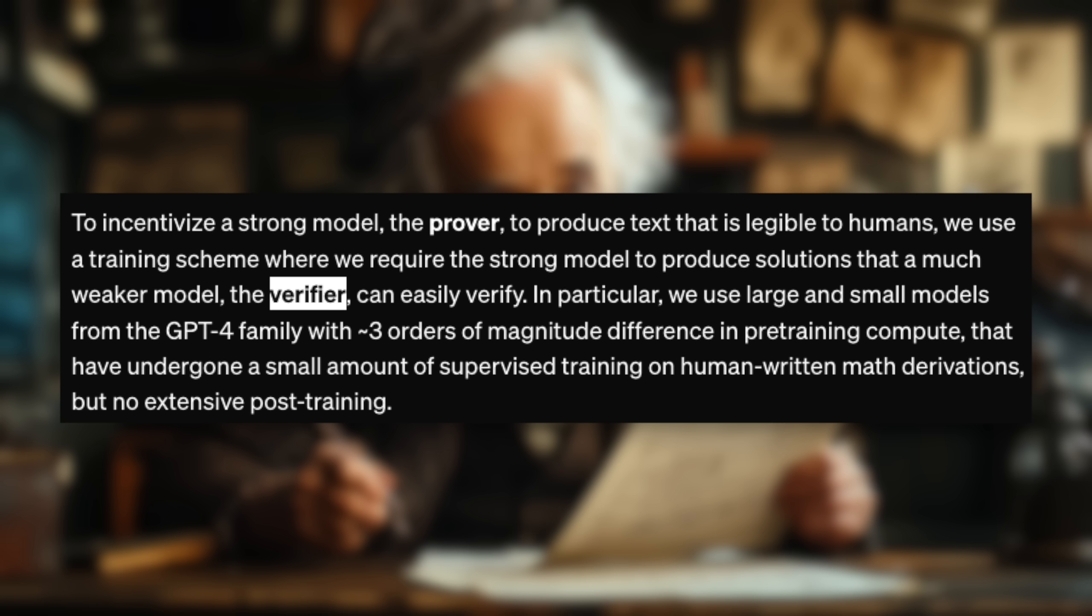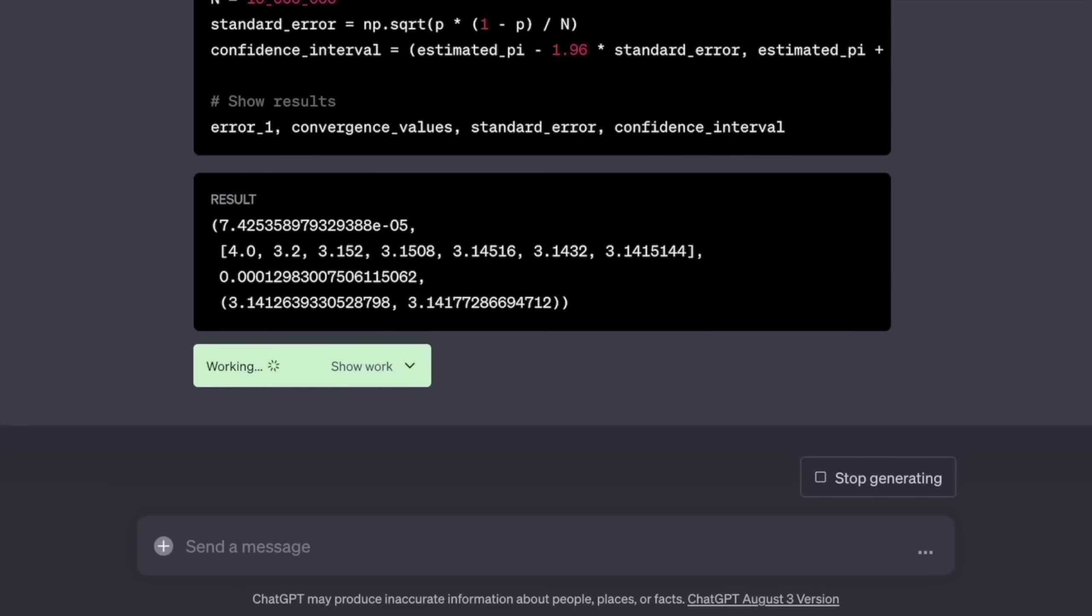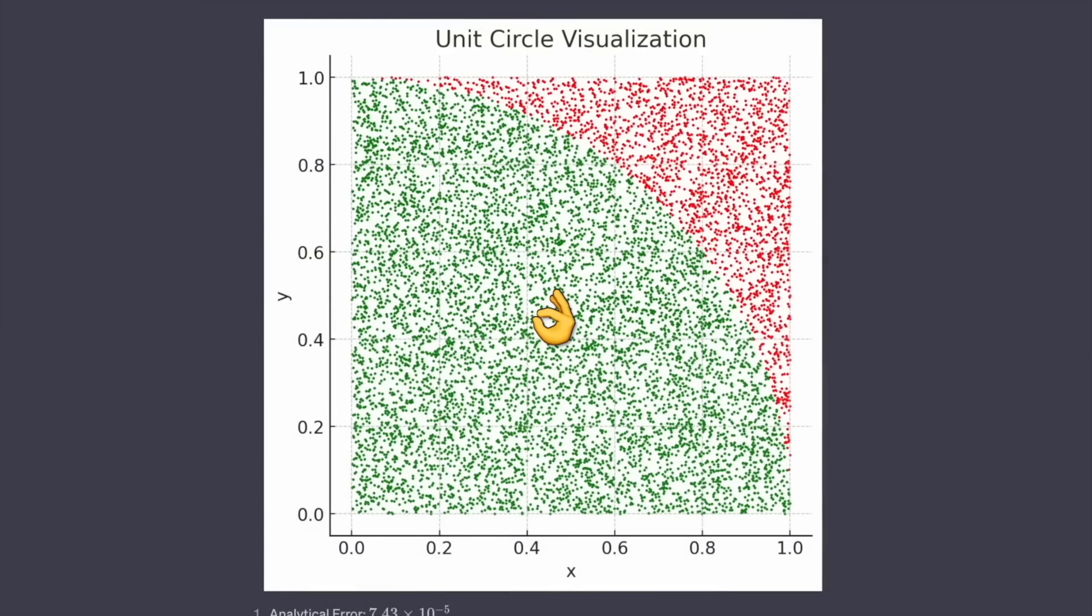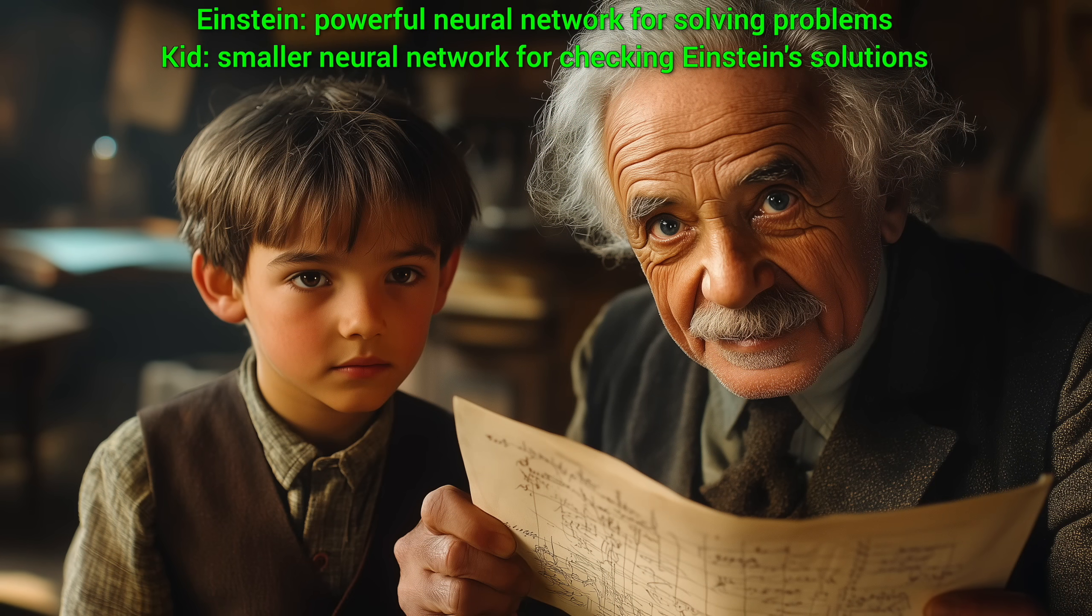So, why do all that? Well, the goal is if we have a problem that is difficult to solve even for Einstein. But when it's solved it, the solution should be easy to verify even for a kid. So, Einstein solves, kid verifies.